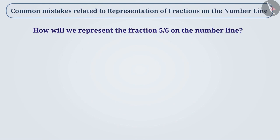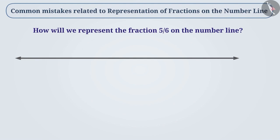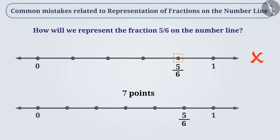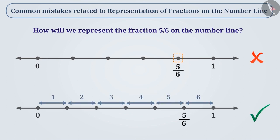Suppose it is asked to represent 5 by 6 on the number line. A number line is made on which 6 points are marked, and considering 0 as the first point, the 5th point is marked as 5 by 6. The correct understanding is that we must take 7 points on the number line so that the total number of parts will be 6.